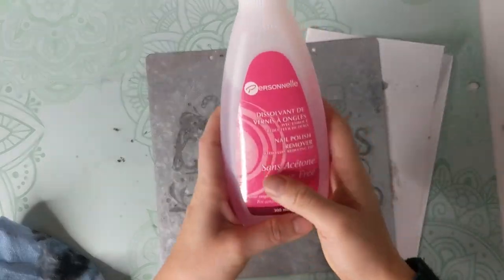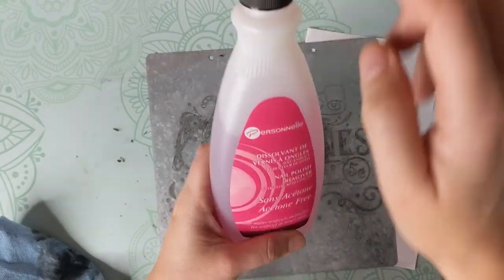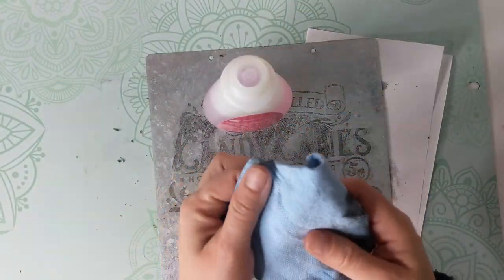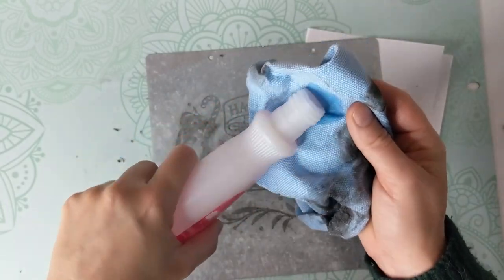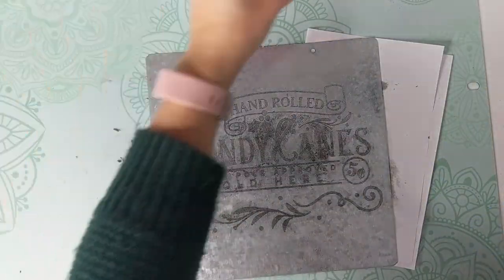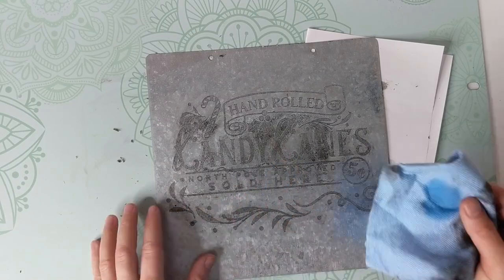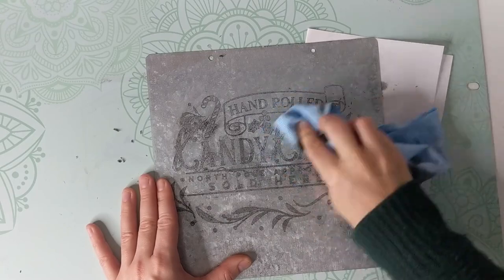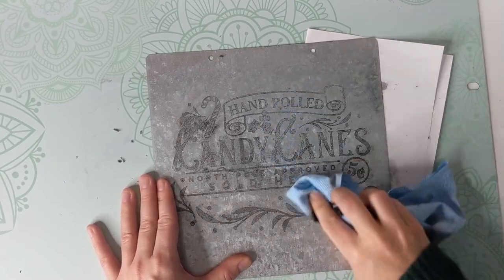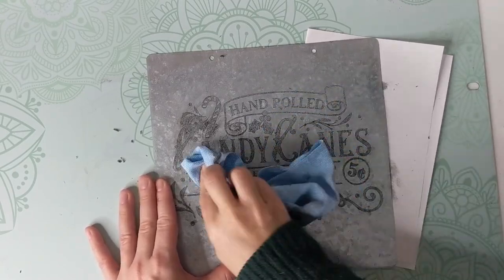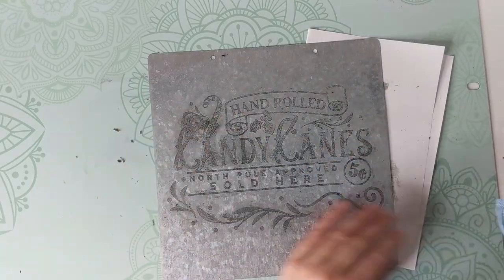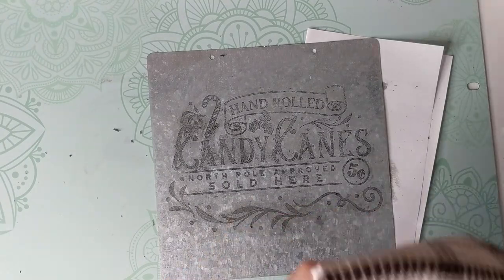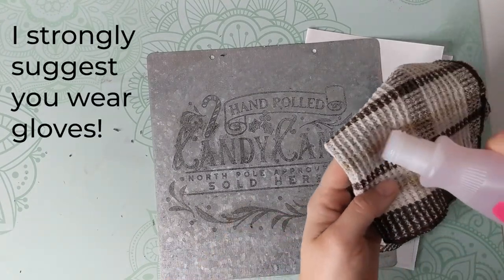So what I've found is what works even better than rubbing alcohol is nail polish remover. Even acetone free. I had left the ink on a bit too long and you can see what it did here. But with the remover, it just cleans perfectly. But you can see that it still scratches my rag. So I think I'm going to try using this one instead.